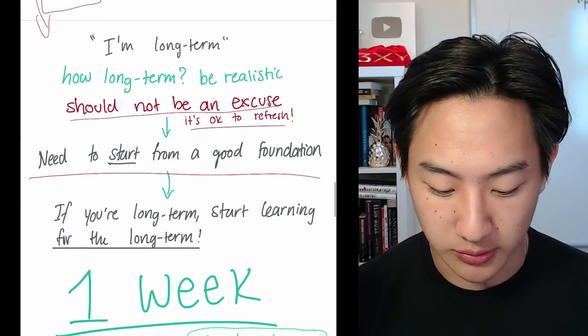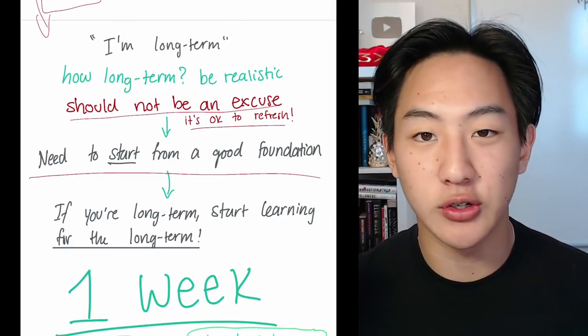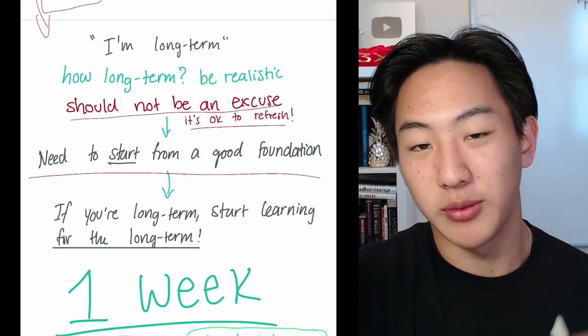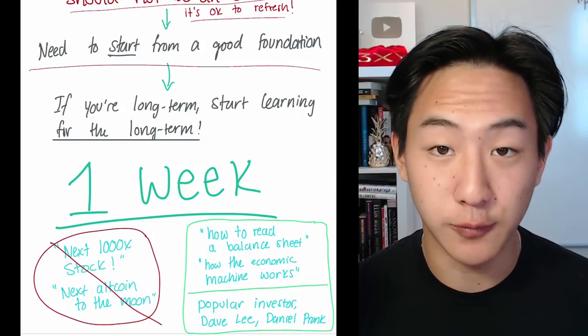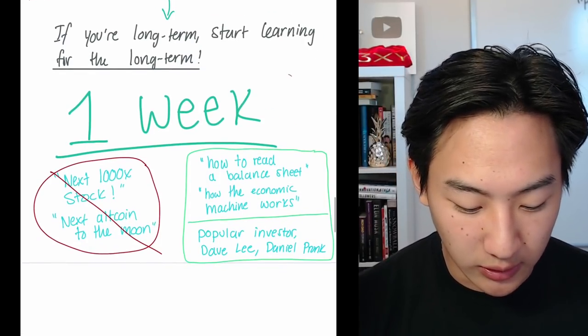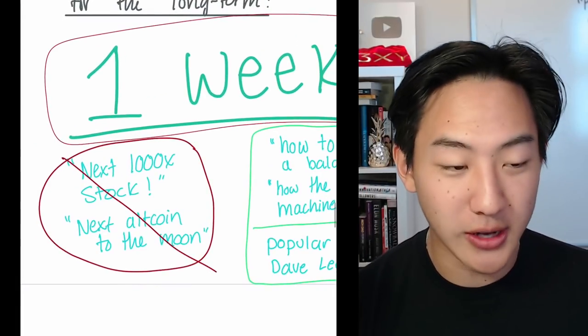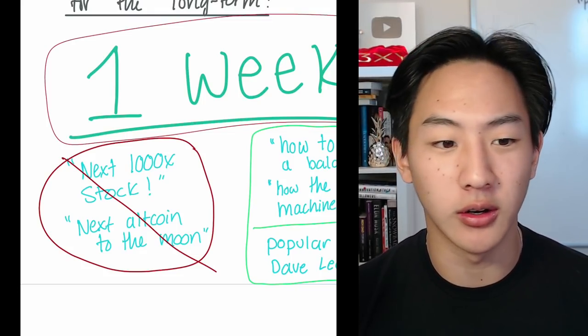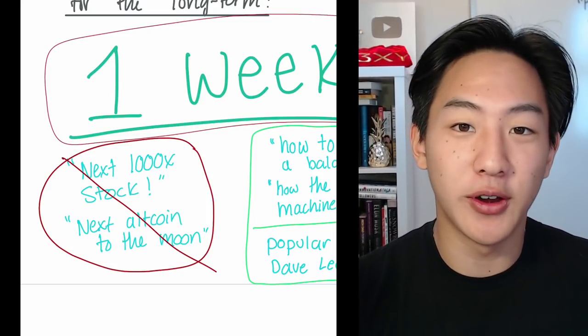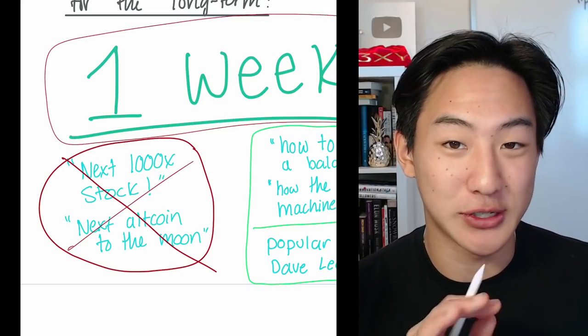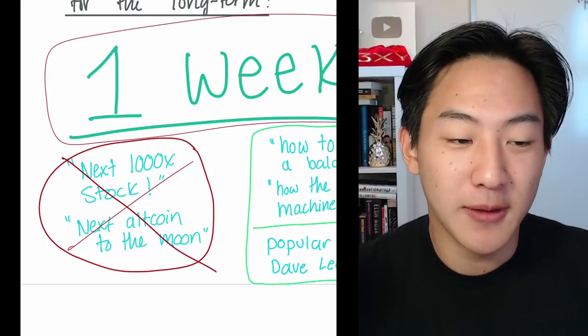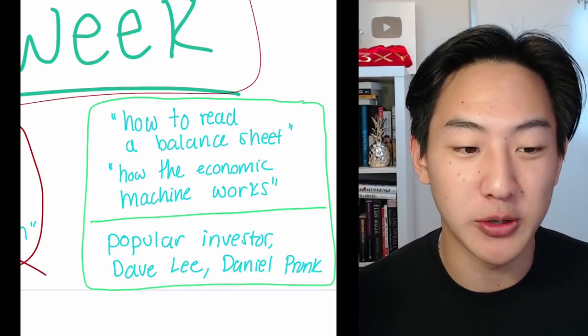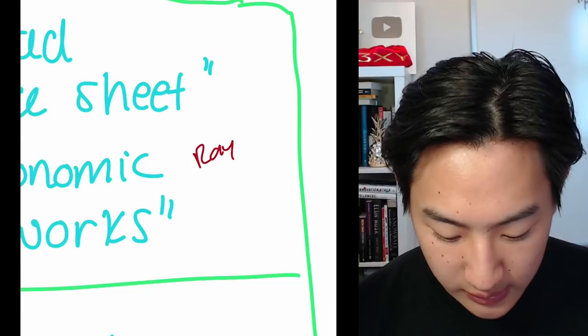So don't be afraid to refresh and reset. You need to start from a good foundation. You need to understand how to value a company, even just using a PE ratio, PS ratio. I'll make videos about this. I've actually made videos about this. I'll put it up here. My exact steps to doing research on a company. And then if you're long term, start learning for the long term. What does that mean? So take literally one week. I encourage you to literally just take one week. Stop watching videos that are saying like next 1000X stock or next altcoin to the moon, safe moon or like refine coin or whatever you want to say. Stop watching those videos or reduce your consumption of those videos for just a little bit, including mine. If I come out with a video like saying 5X, whatever, maybe you just hold off on it for a little bit.